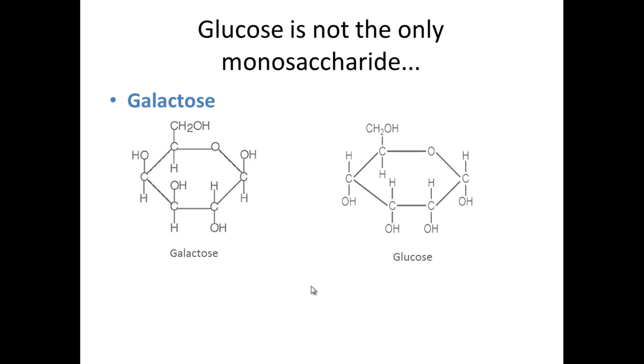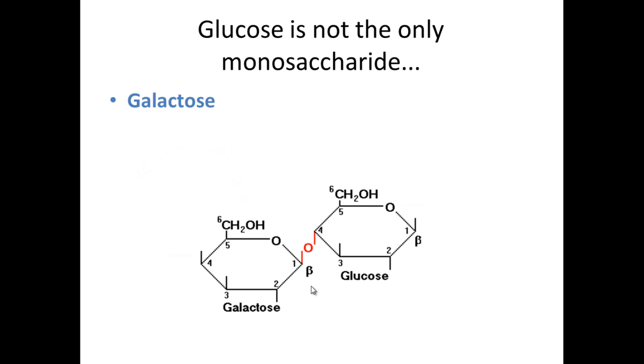You might have heard of this before. If individuals are lactose intolerant, it means they cannot digest lactose and therefore they have irritable bowel or some form of reaction to that. You can see here that this forms a 1-4 glycosidic bond, because this is carbon 1 and this is carbon 4.